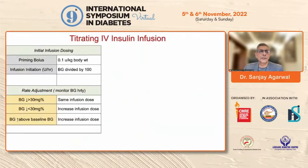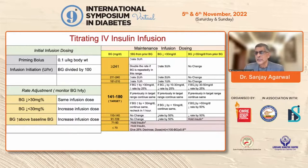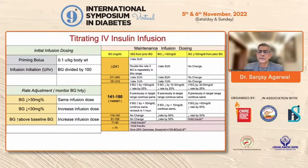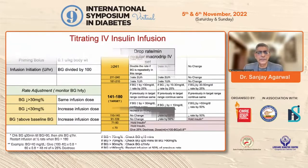In relatively stable non-critical, non-ICU settings, we advocate subcutaneous insulin therapy. The RSSDI inpatient hyperglycemia guidelines have published an algorithm for IV insulin management — including priming bolus, infusion rates, rate adjustments, and hypoglycemia management — which I recommend you review. We have a clear algorithm-based approach for IV insulin therapy.